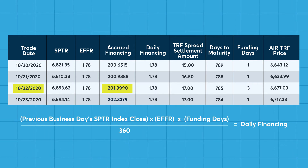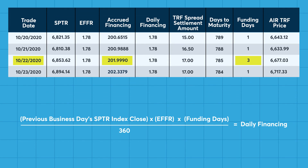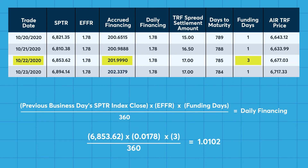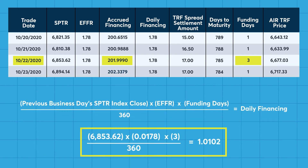The number of funding days in this case is 3, as the settlement cycle accounts for the weekend. So the daily financing amount is 1.0102.